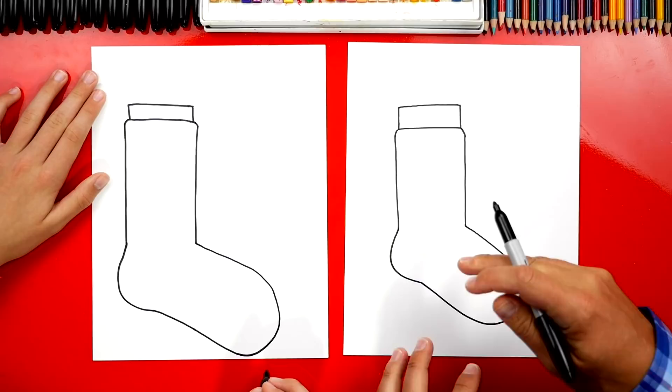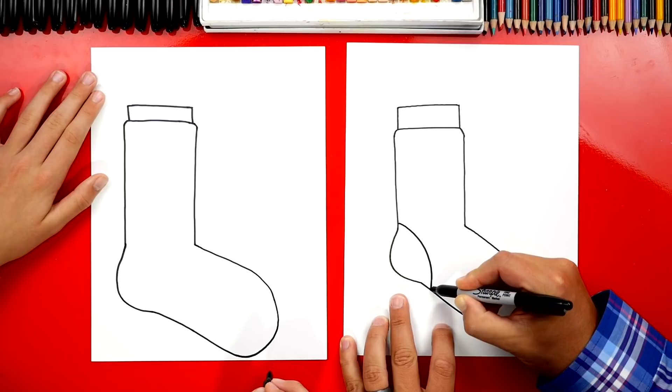So we're gonna draw a curve. Be creative with our socks. Yeah. Let's draw a curve for the heel. Then we can also draw a curve down here for the toe.